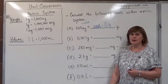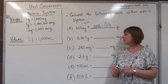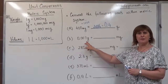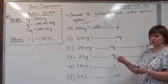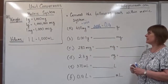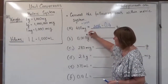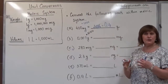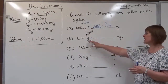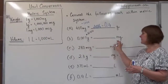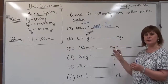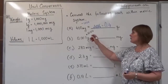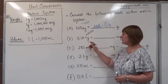In Example B, we are converting from a larger unit to a smaller unit — gram is larger than milligram. Our goal is to multiply by 1,000, because expressing the same number in smaller units means the value should be larger.